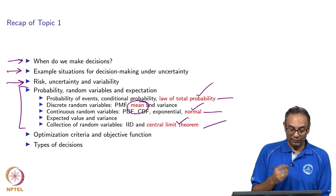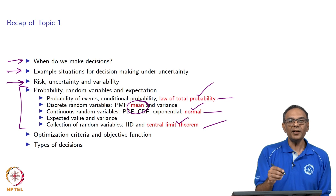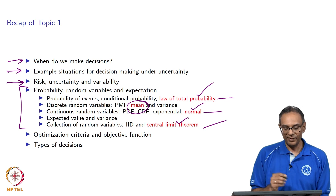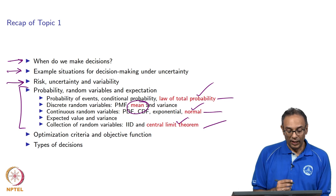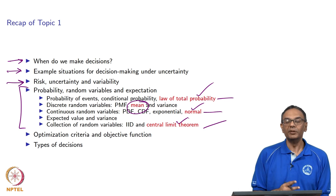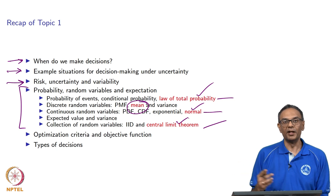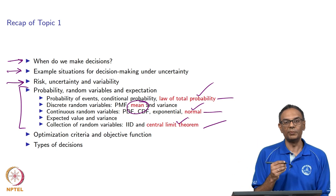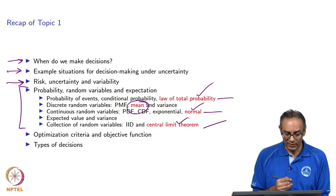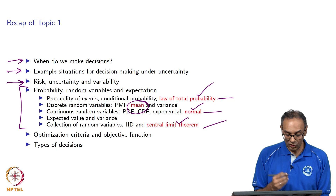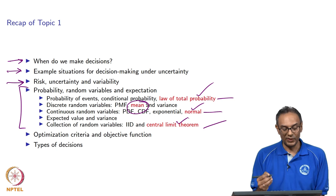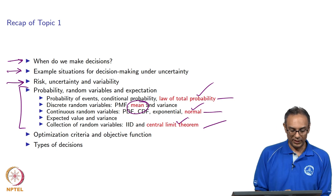I would also go over the law of total probability, the normal distribution and its properties, as well as the central limit theorem. The other topics listed that are not in red are things we will do later in the course — in fact, every one of those topics we will touch upon. So if you are not familiar with some of them, it might be a good idea to touch base.